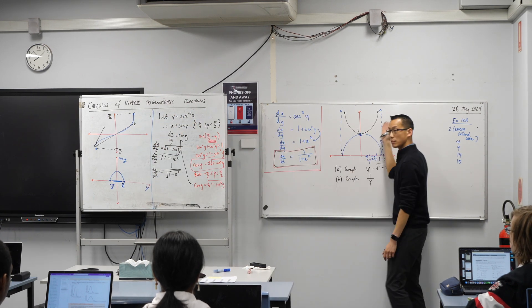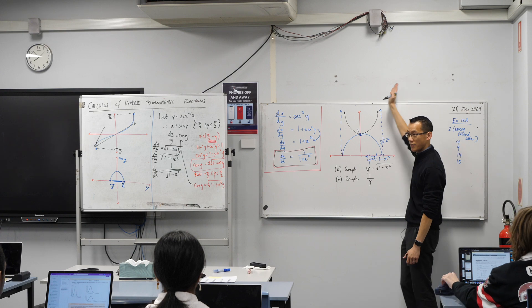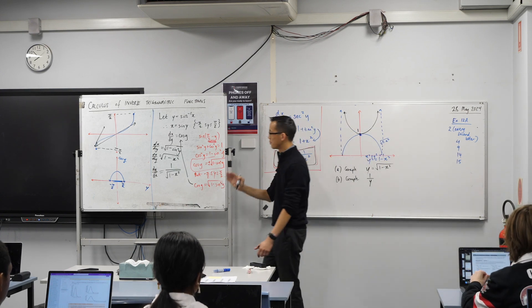And then you get the same thing happening opposite over here. It skyrockets, and eventually you get a vertical tangent on the end. Make sense?